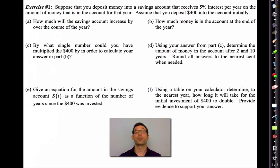Exercise number one. Suppose that you deposit money into a savings account that receives 5% interest per year on the amount of money that's in the account for that year. Assume that you deposit $400 into the account initially. Letter A, how much will the savings amount increase by over the course of the year? Pause the video right now and try to figure out how much the savings will increase over the course of the year.